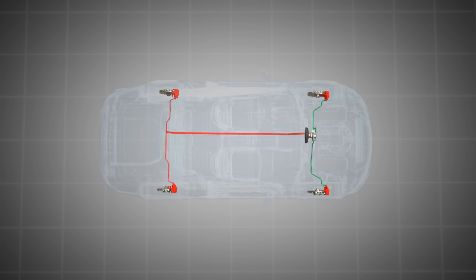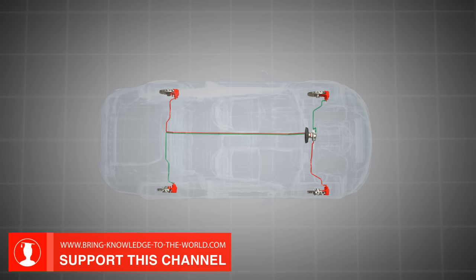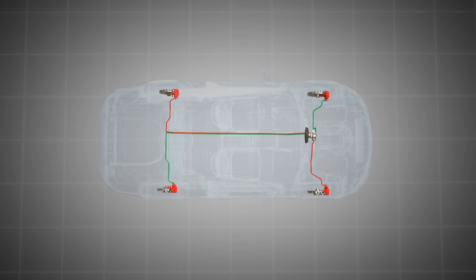In the diagonal split brake system, one brake of the rear wheel and one brake of the front wheel are supplied by one of the two brake circuits.